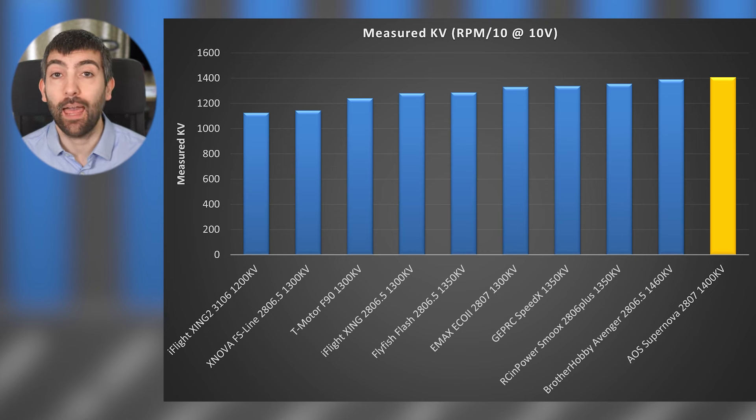Looking at the measured kV of the Supernova 2807, we can see that it tests out at almost exactly 1400 kV, and that's no accident because I ask RC and Power to label these motors according to their measured kV rather than the theoretical kV of the winding, because I think that gives a more accurate representation of how the motor is going to behave and how it's going to feel when you fly it.